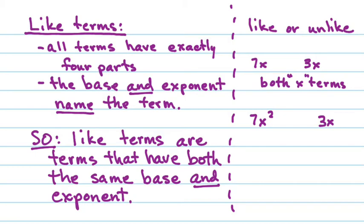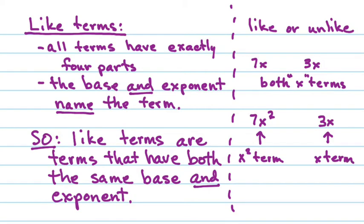They're unlike. What's different about them? One of them has an exponent and the other does not. So this one is an X squared term, and this one is an X term. X squareds and X's are not the same, so therefore these are unlike.